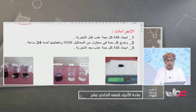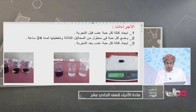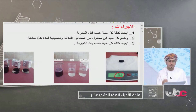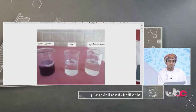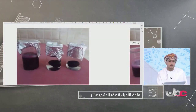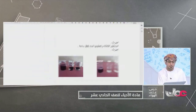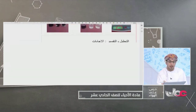لا بد من قياس كتلة كل حبة عنب قبل التجربة باستخدام الميزان. ظهرت عندي قراءة 5.8 جرام. ثم سنضع كل حبة في إما محلول سكري أو ماء أو عصير العنب، ثم نغطيها بقطعة من الألمونيوم ونرى النتيجة فيما بعد.